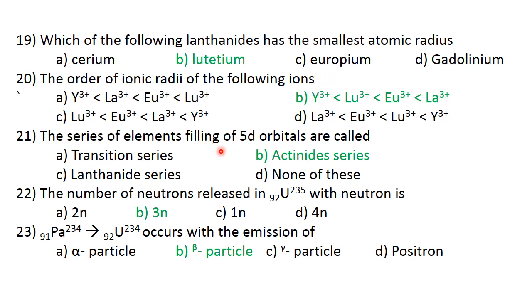The series of elements filling the 5f orbitals are called actinide series. B is the correct answer for 21. The number of neutrons released when uranium 92-235 fissions with neutrons is 3n. This is nuclear fission reaction. Three neutrons are released.